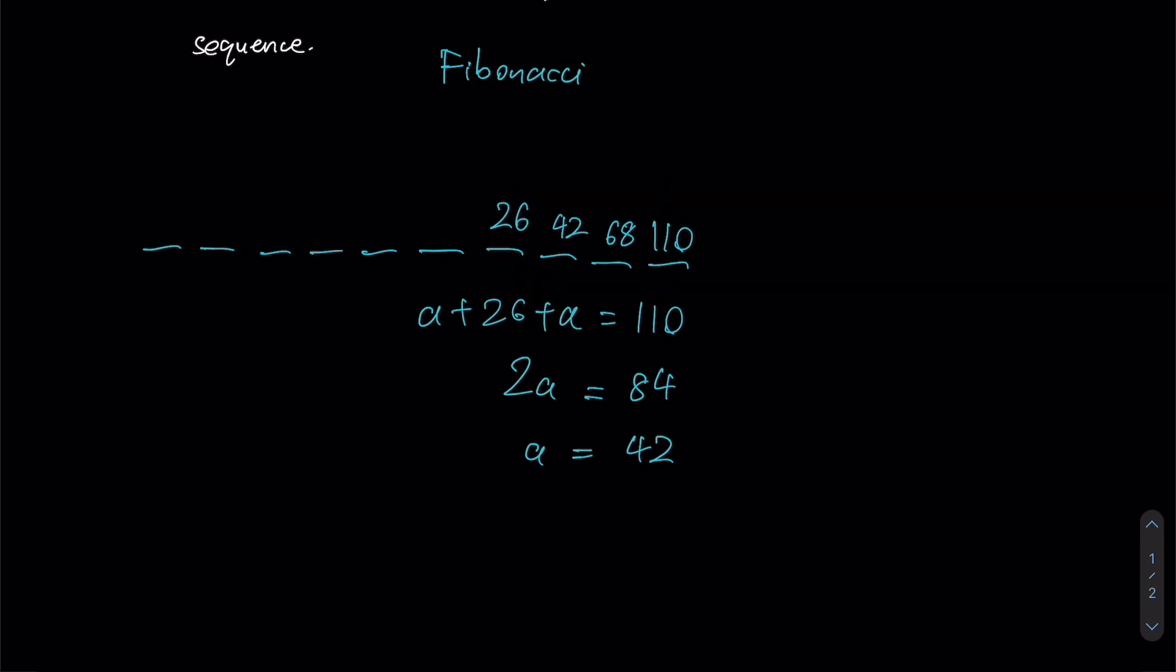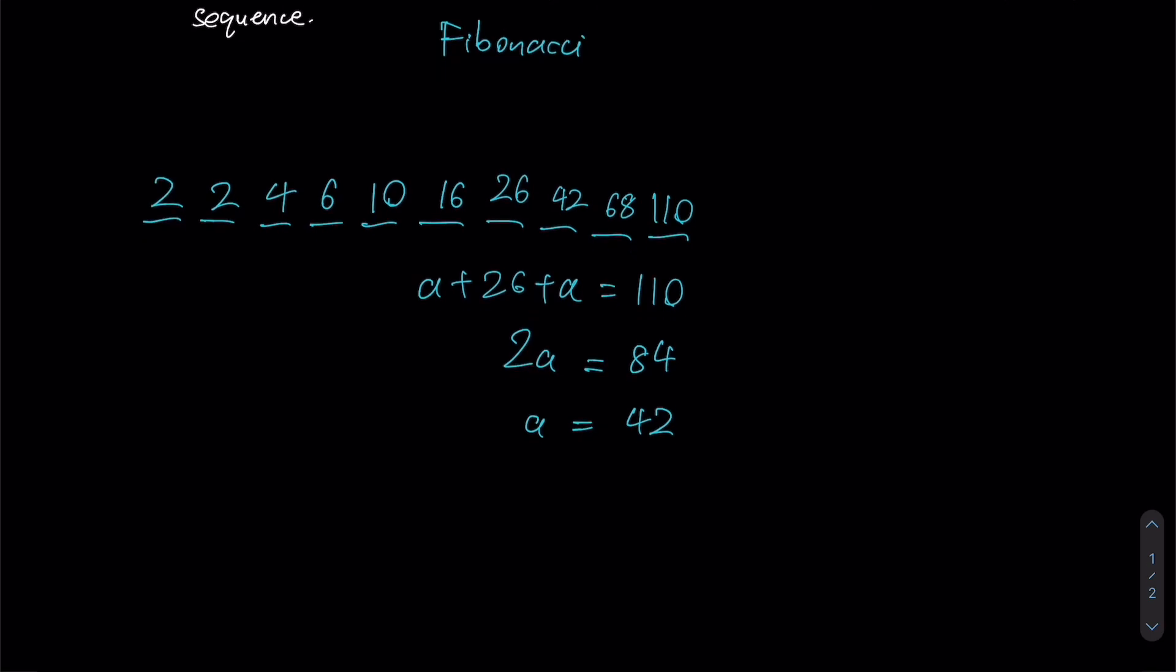Now that we have a string of numbers where there are no blanks in between, this is the stage where we can start to work backwards. 42 minus 26 would give us 16. 26 minus 16 will give us 10. 16 minus 10 gives us 6. 10 minus 6 gives us 4. 6 minus 4 gives us 2, and of course 4 minus 2 must give us 2 as well.